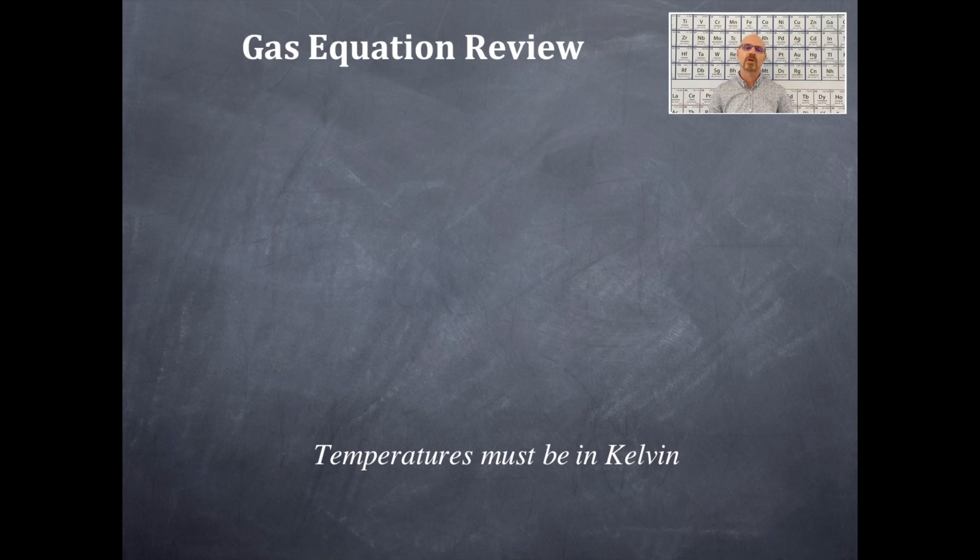The first thing that we're going to note down is that all your temperatures must be in Kelvin in this entire unit. It doesn't matter which equation you're using or what temperature you start off with. You have to have all your units of temperature in Kelvin. So you're going to convert all your degrees Celsius into Kelvin. That's degrees Celsius plus 273.15, and that will give you your Kelvin temperature.